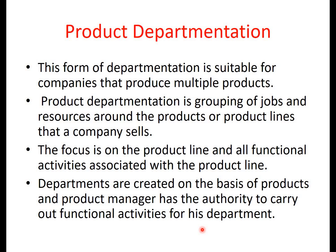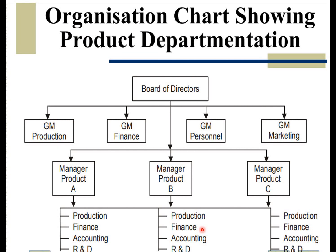A product manager is responsible for all changes and everything related to the product. Looking at the organization chart for product departmentation: there is a GM production, GM finance, GM personnel, and GM marketing. Under these, there are Product Manager 1, Product Manager 2, and Product Manager 3. Each product manager oversees functions such as production, finance, accounting, and R&D for their respective product. This chart illustrates an organization structured on the basis of product departmentation.